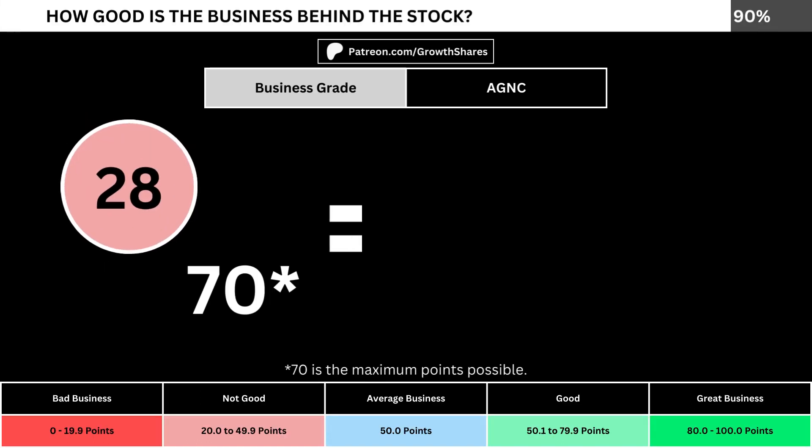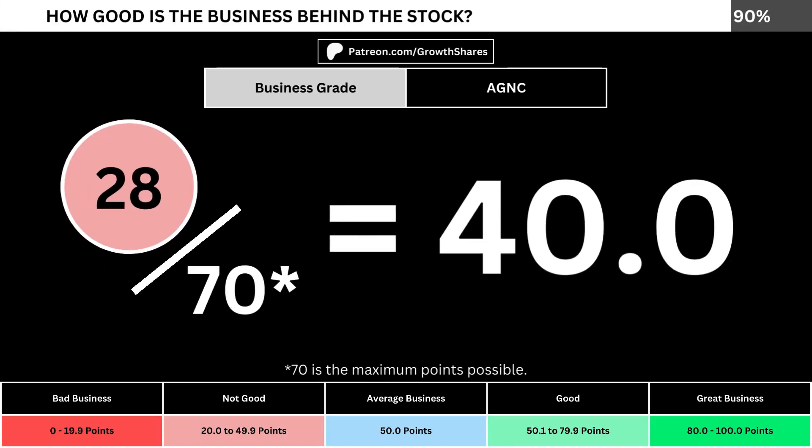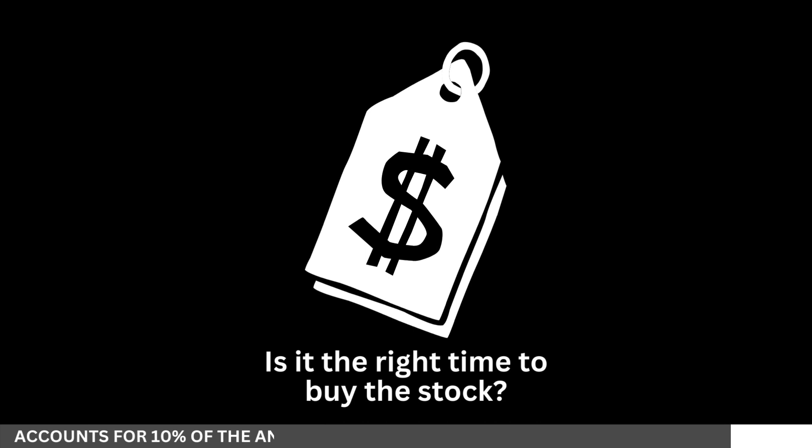Adding everything together, we divide the points awarded by the maximum points possible, which is 70. That gives us the business grade for the company. We want the business grade to be above 50, meaning it has a better than average business. But of course, we can't forget about the fair price and whether it's the right time to buy the stock.